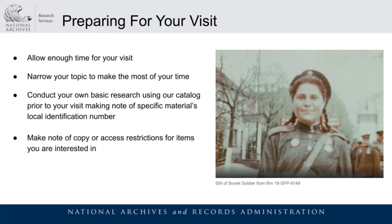Having a more specific idea will help you spend your on-site time wisely. Conducting basic research before your visit using our online catalog will help you understand what records are available on your topic. Please make note of the local identification number and film title — each item has a local identification number, and that is how you locate the film in our finding aids. For example, the still on this slide is taken from a World War II era film and its local identification number is 18-SFP-9149.